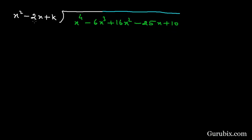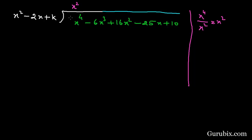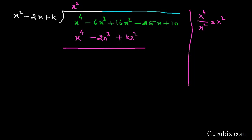We shall divide x⁴ minus 6x³ plus 16x² minus 25x plus 10 by x² minus 2x plus k. First, we find the first term of the quotient by dividing the first term of the dividend, x⁴, by the first term of the divisor, x², which gives us x². We then multiply x² with all three terms of the divisor, giving us x⁴ minus 2x³ plus kx².